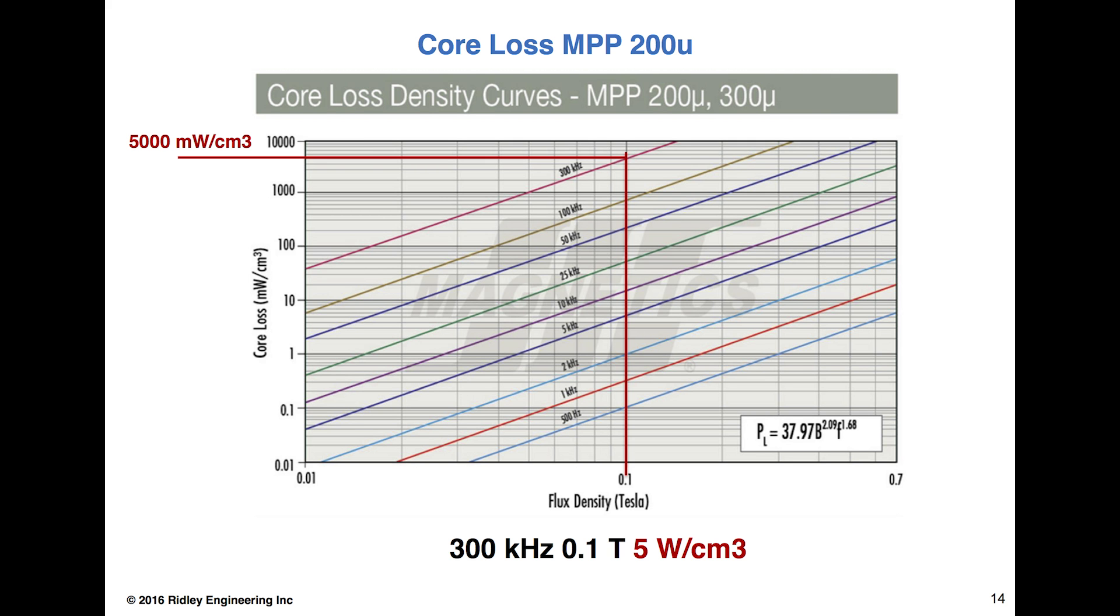Remember, this is not the DC excitation, this is the AC excitation, or the amount of ripple current flowing in each cycle. If you look at the top red curve on this diagram, that's our 300 kilohertz curve. You'll see the red line from the bottom at 0.01 Tesla goes up there, read it across on the left, and it comes out with about 5,000 milliwatts per centimeter cubed.